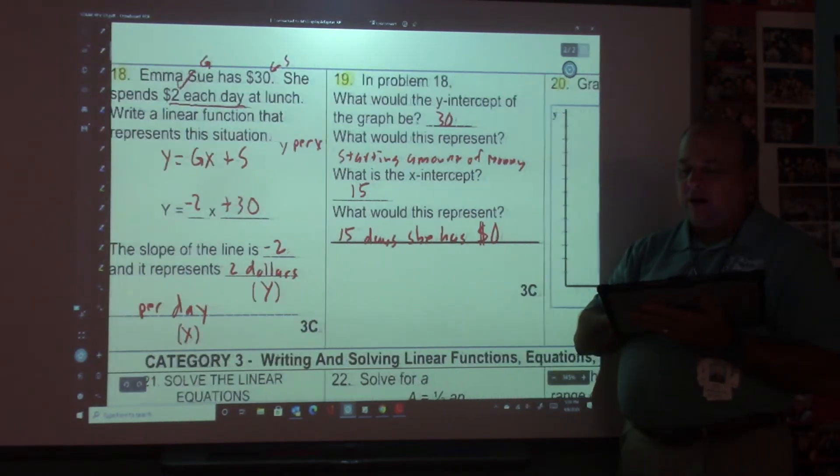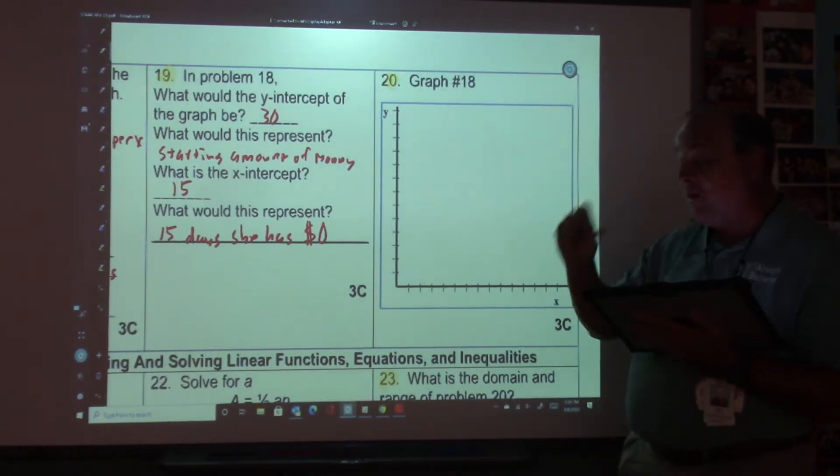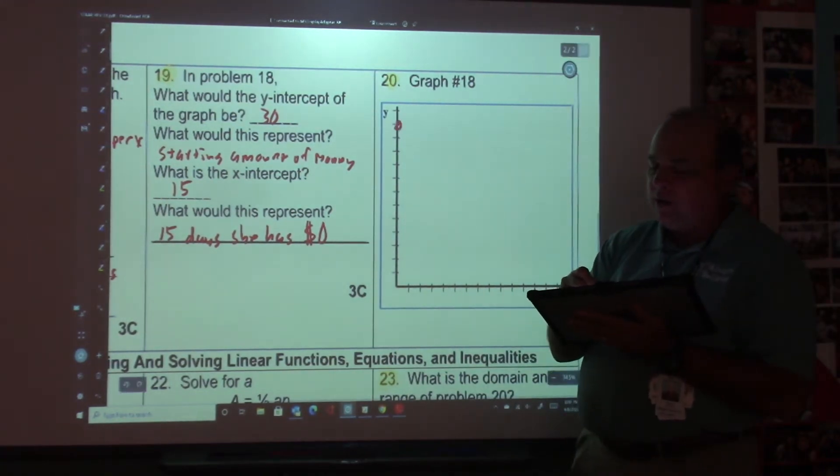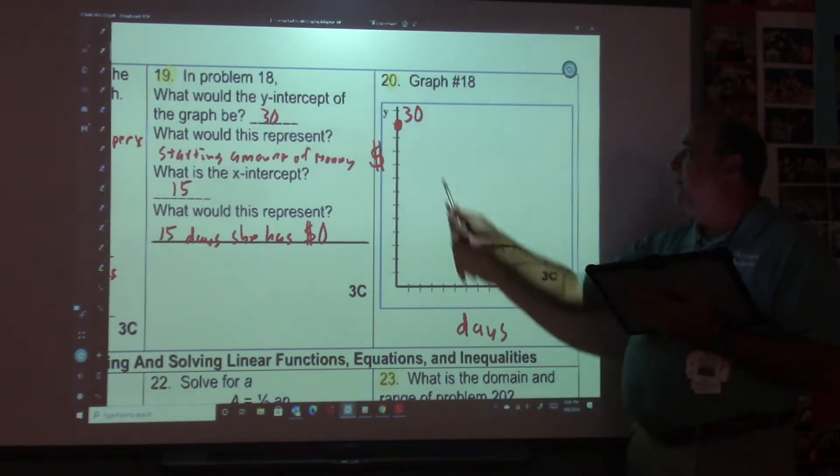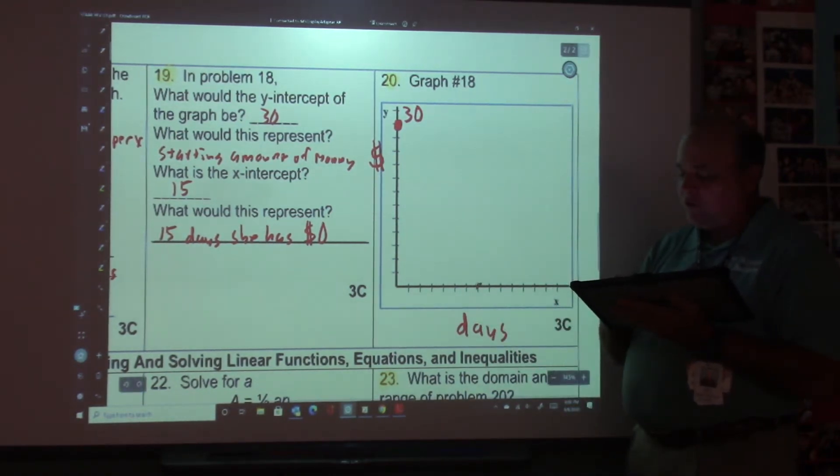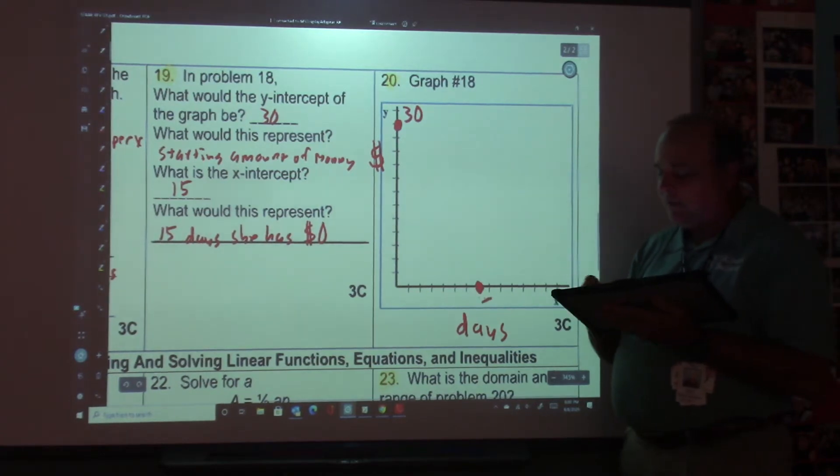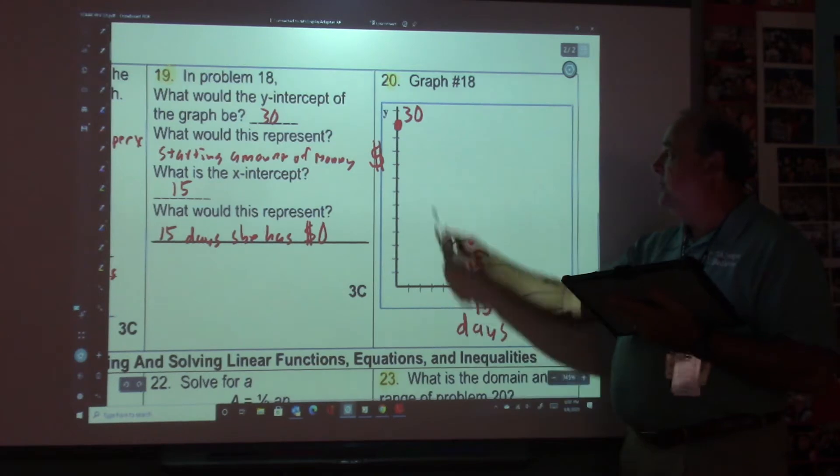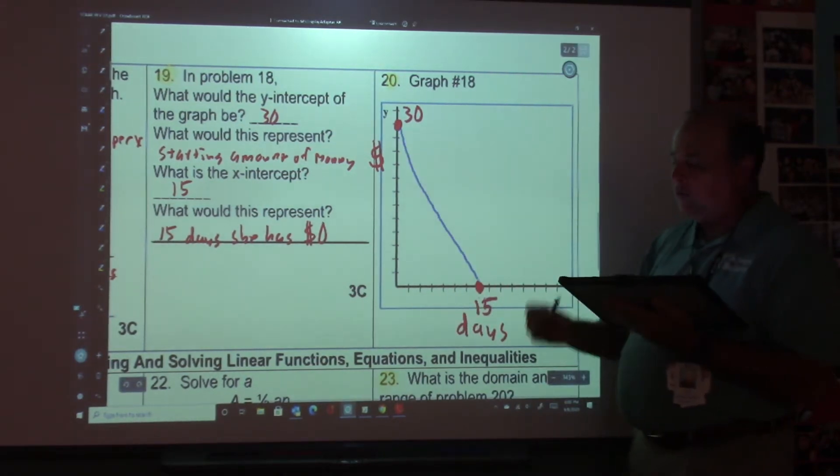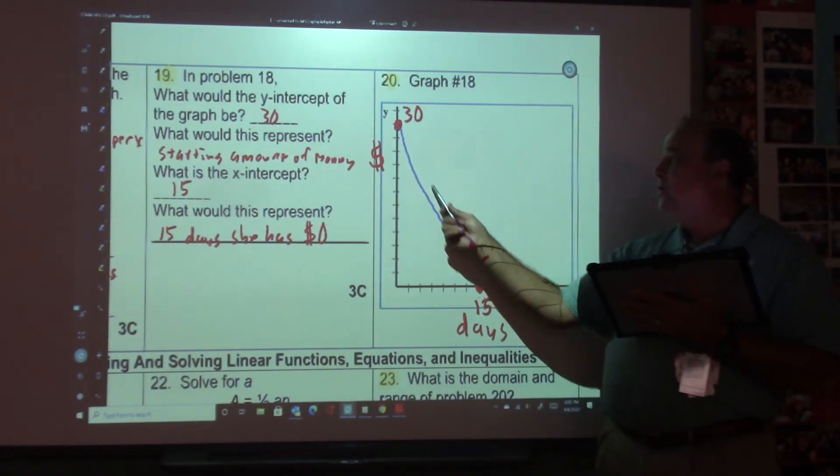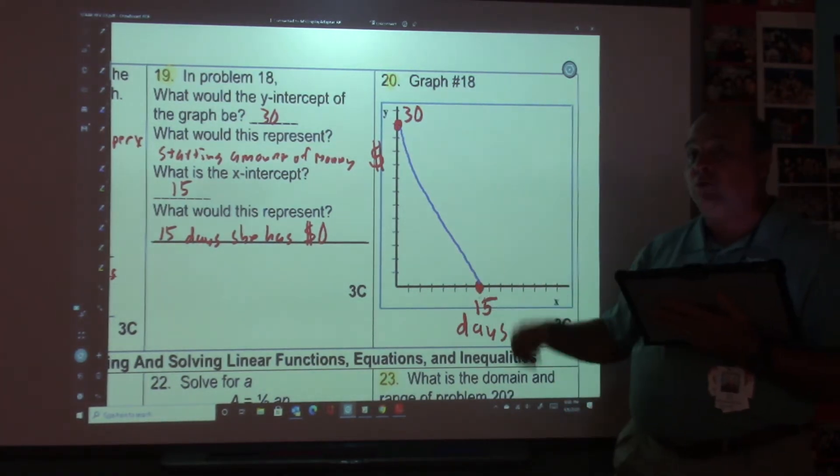Let's go to graphing. So to graph this, remember this doesn't have to be like a perfectly accurate graph. We know our Y intercept is 30. So I'm going to dot here and I'm going to put a 30 right here. And then my Y axis is dollars and my X axis is days. Make sure you're labeling these every time. And then this is going to go down to 15. So I'm just going to put somewhere down here and put a 15. Doesn't have to be perfectly accurate. And then just connect the dots. That's all you got to do. Don't make this too difficult. But every day, she spends $2. At 15 days, she would be out of money, wouldn't she?